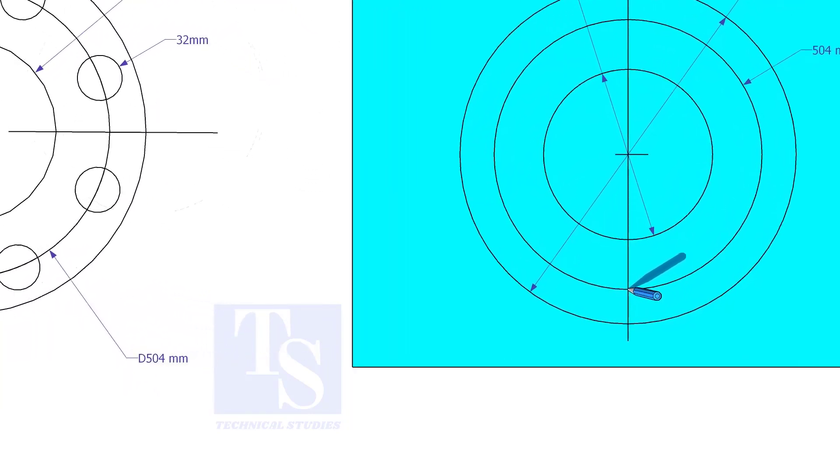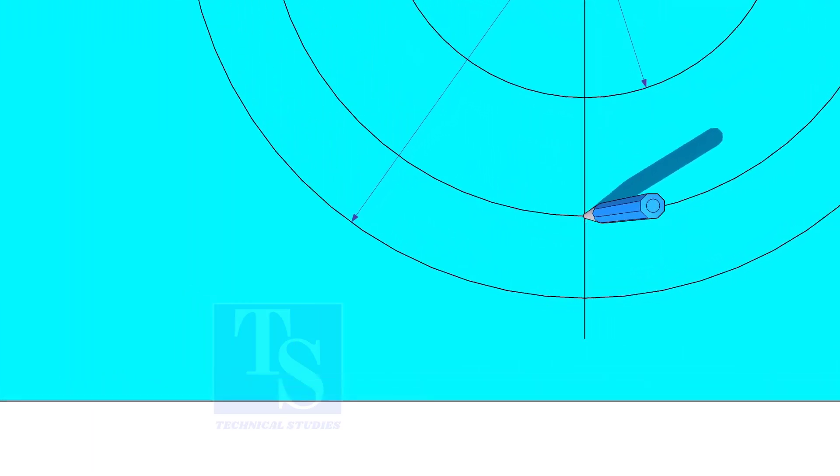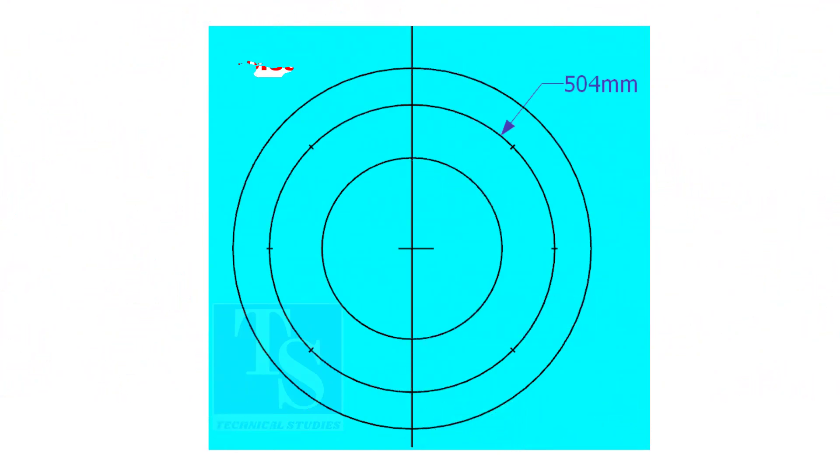Punch mark where the PCD circle cuts the center line. Since the number of holes is 8, divide the PCD into 8 equal parts. To divide the circle easily and accurately, let us find the chord length of the holes.